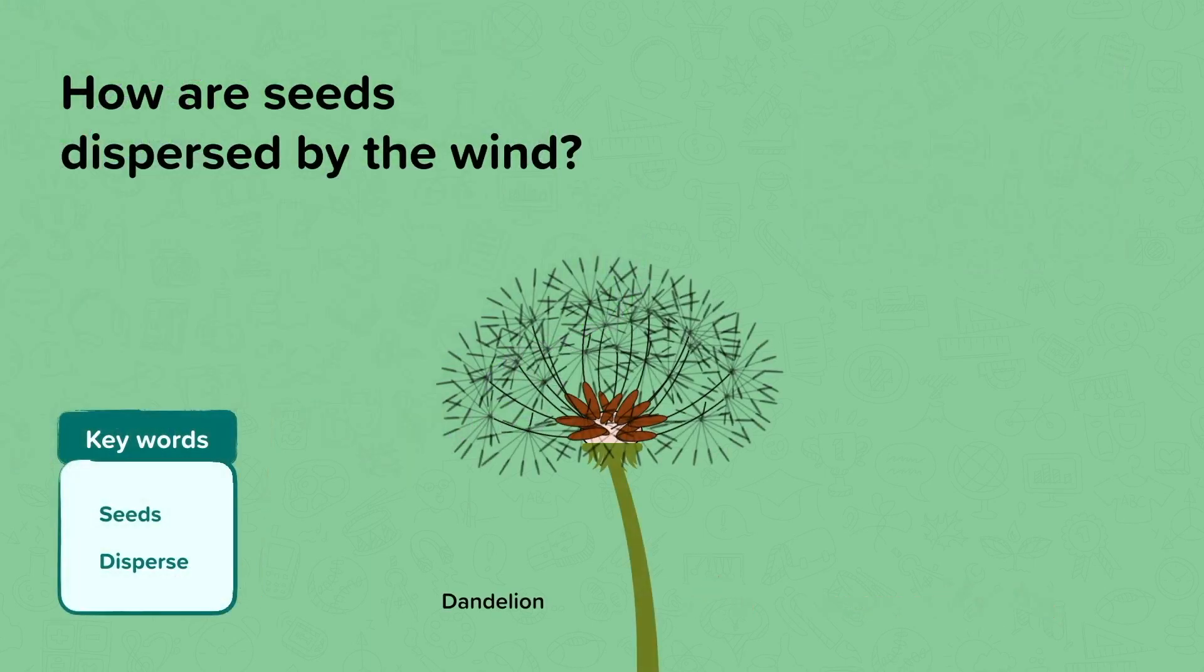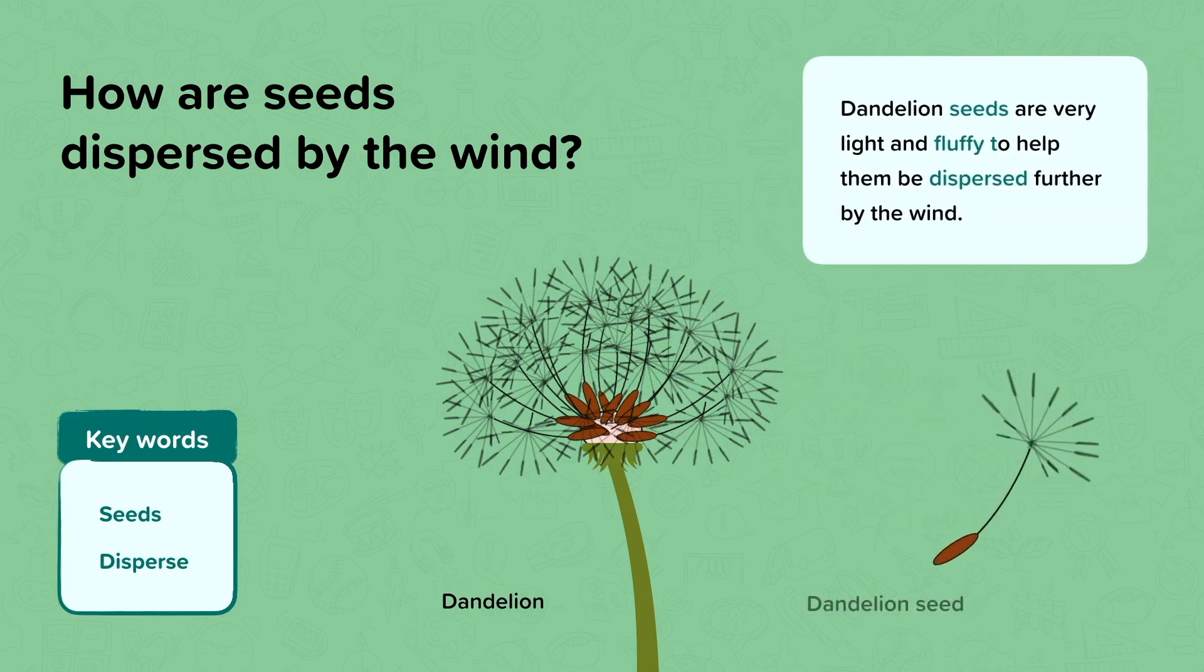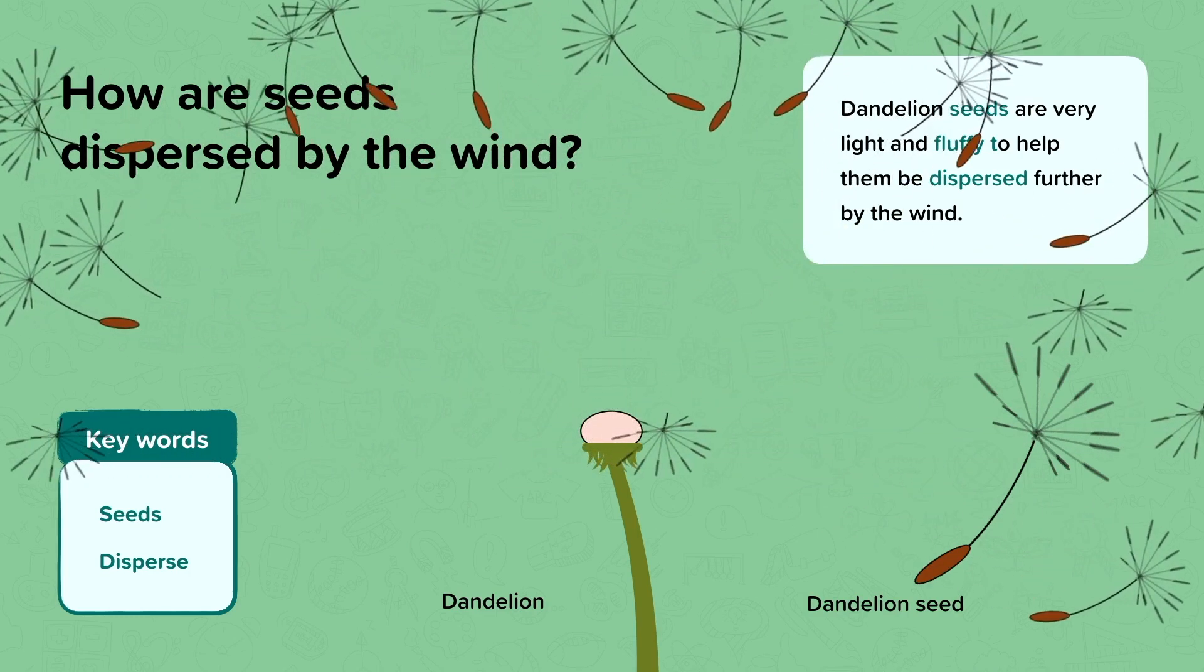Here is another example of a plant that uses wind dispersal. Have you seen a dandelion before? How does it use the wind to disperse its seeds? Dandelion seeds are both light and fluffy, which means the wind can easily disperse them far away from the parent plant. What happens when you blow on a dandelion? The seeds disperse in different directions.